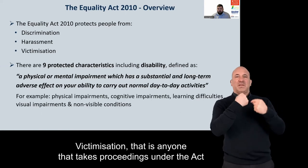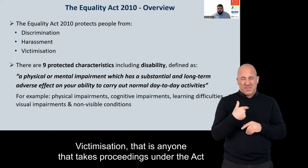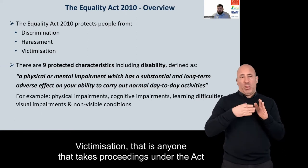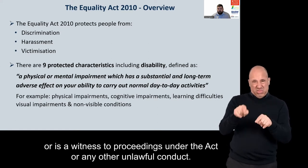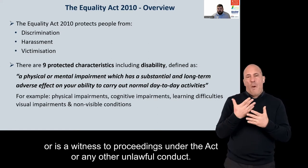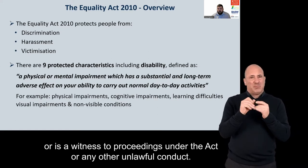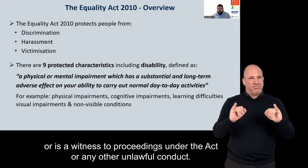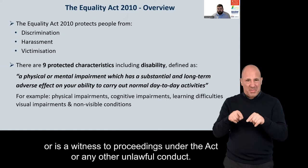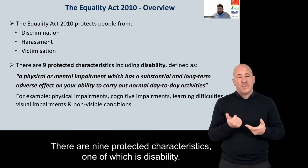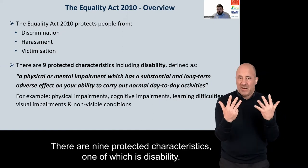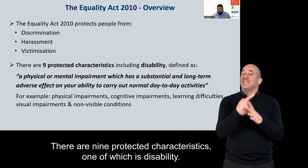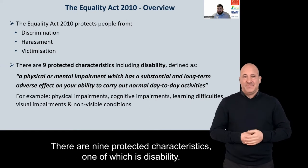The Act also protects from victimisation — that is anyone who takes proceedings under the Act or is a witness to proceedings under the Act — or any other unlawful conduct. There are nine protected characteristics, one of which is disability.